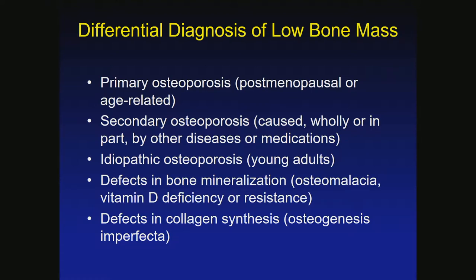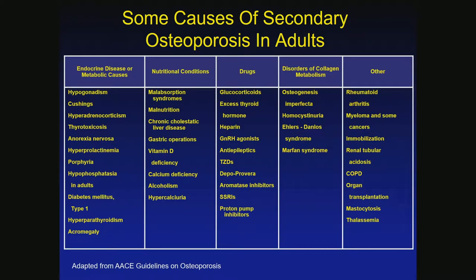Someone comes in with an elevated calcium and you're trying to figure out — as you're getting it down — why they have that elevated calcium. Same thing with bone density: they have a very low bone density or a history of fracture, and you want to know why before you just treat with drugs. This is a list of secondary causes — there are lots: endocrine disorders, nutritional conditions, drugs, and unusual disorders of collagen metabolism.